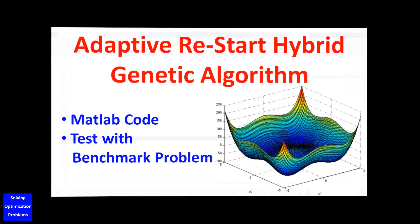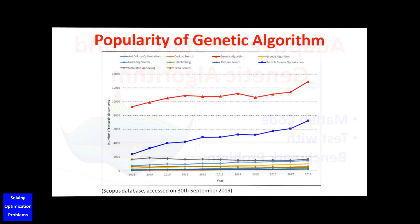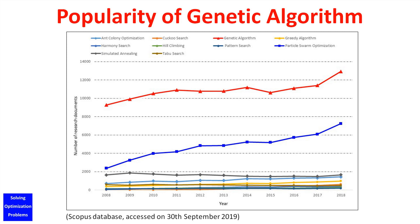Genetic algorithm, or GA, is a popular meta-heuristic and stochastic optimization algorithm based on the mechanisms of natural selection in Charles Darwin's theory of natural evolution. Genetic algorithm was first introduced by Holland in 1975, and now it is still very popular in various research communities. Genetic algorithm is one of the most popular stochastic optimization algorithms, often used to solve complex large-scale optimization problems in various fields.